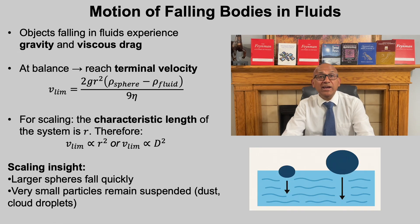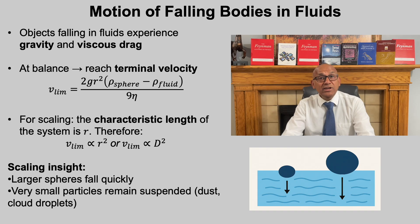So far we have looked at how fluids move inside channels. Now let us turn to how fluids affect the motion of objects falling through them. When a sphere falls in a fluid, two competing forces act on it: gravity pulling it downward and viscous drag resisting the motion. At first the sphere accelerates, but soon gravity and drag balance, and the sphere falls at a constant speed called terminal velocity. The expression is: terminal velocity equals 2 times g times r squared times the density difference between the sphere and fluid, divided by 9 times the viscosity. Terminal velocity scales as r squared, or equivalently as the diameter squared.